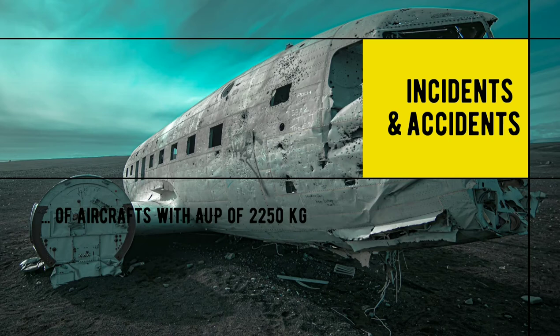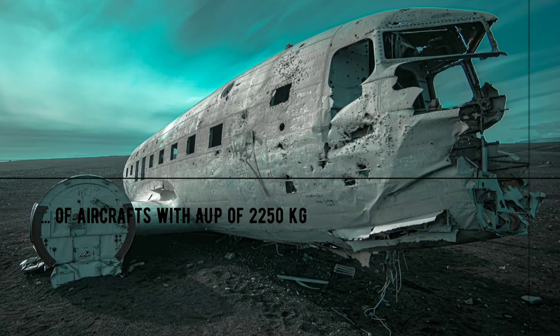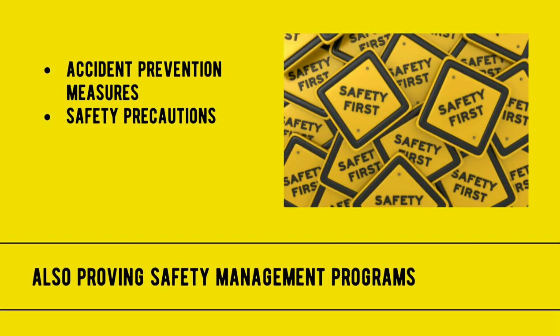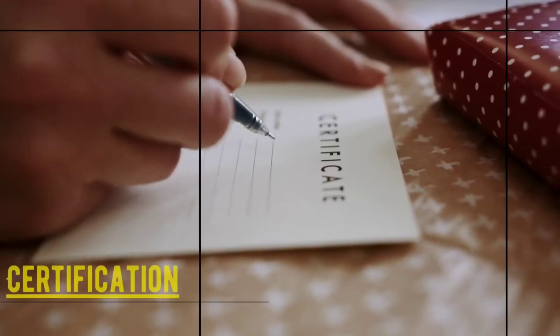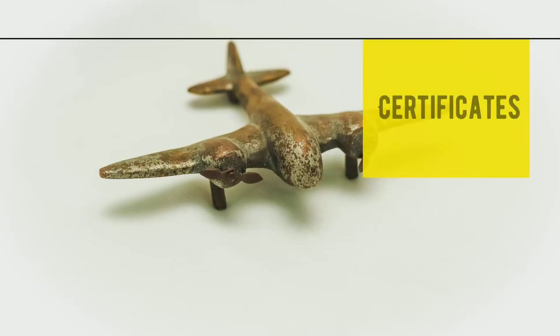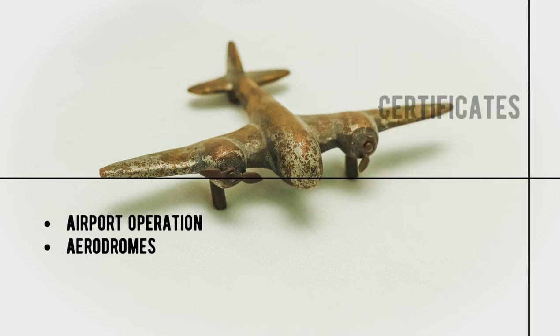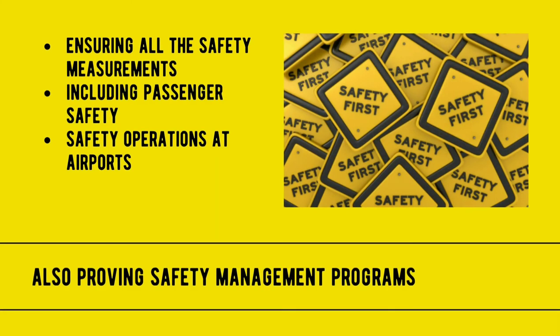Number six: conducting investigations. DGCA investigates incidents and serious accidents involving aircraft with an all-up weight of up to 2,250 kg, and takes accident prevention measures including formulation and implementation of safety aviation management programs. Number seven: certification. They certify all airports and aerodromes and their functioning in proper handling of passengers and safety issues.